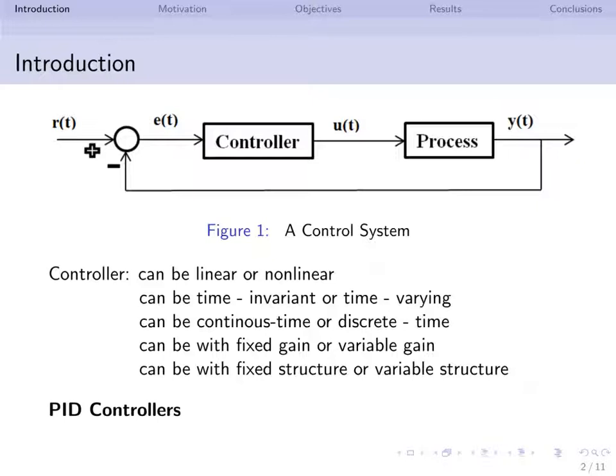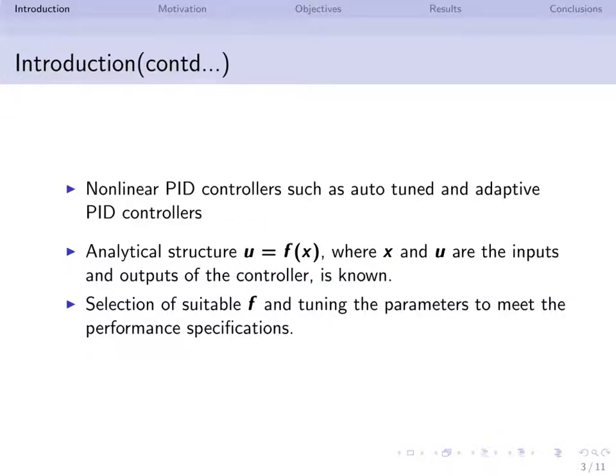However, these PID controllers do not work well for non-linear and complex plants. For such non-linear plants, non-linear PID controllers such as auto-tuned and adaptive PID controllers were developed. Usually for such controllers, their analytical structure u equals f of x, where x and u are the inputs and outputs of the controller respectively, is known. The tasks of the design engineer are selection of suitable f and tuning the parameters to meet the performance specifications.